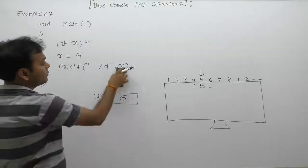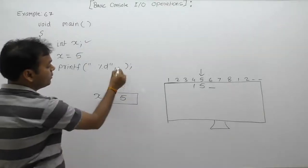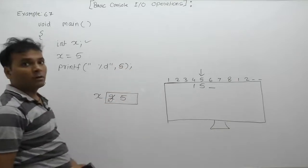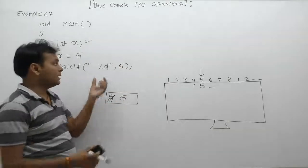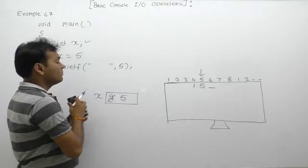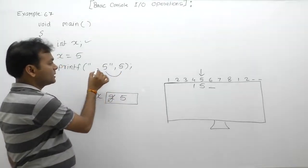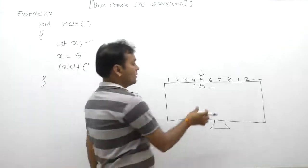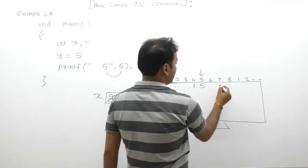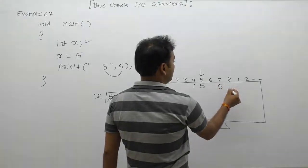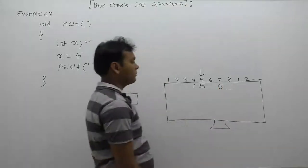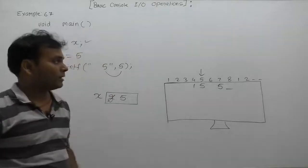in place of x we are replacing the value of x which is 5. In place of format specifier percent d, we are replacing the argument value as 5, therefore the total message becomes space 5. First it will print a space, then 5. Now the cursor will be available on the eighth position. This is the final result or final output of the current printf function.